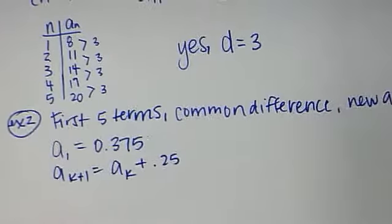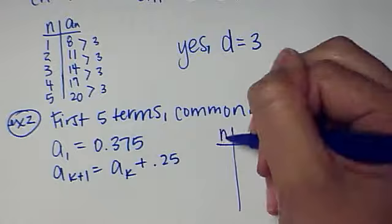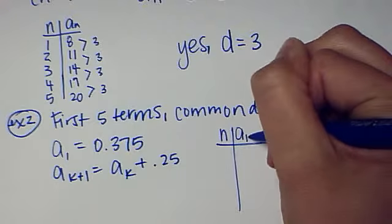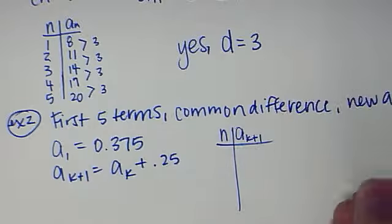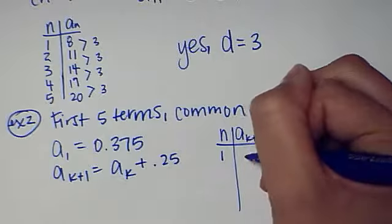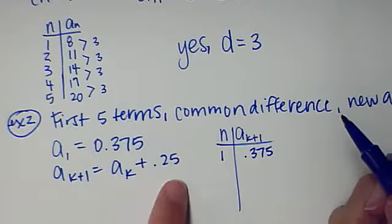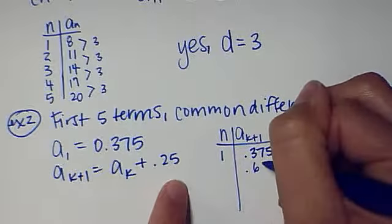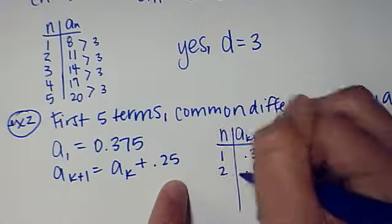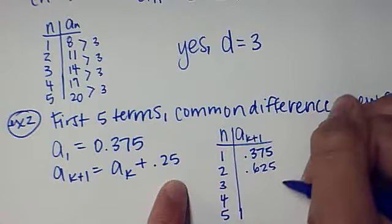We want to find the first five terms, N and A sub K plus 1. So N is one, the first term is 0.375. The second term is 0.375 plus 0.25, which is 0.625. That's term two. Term three, four, and five are what we want.